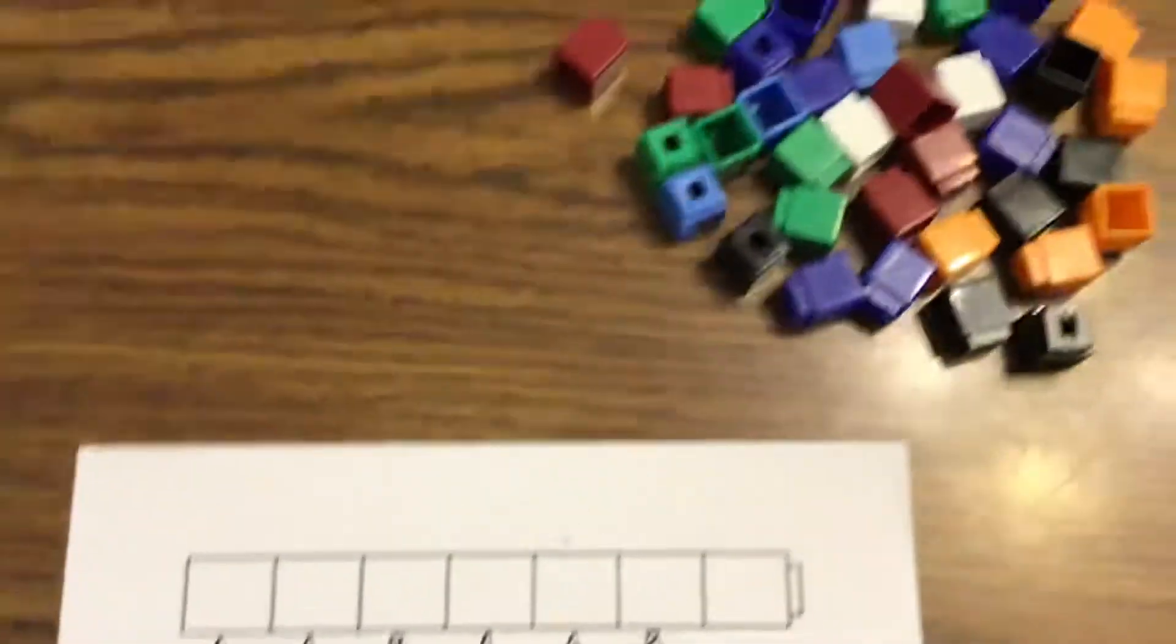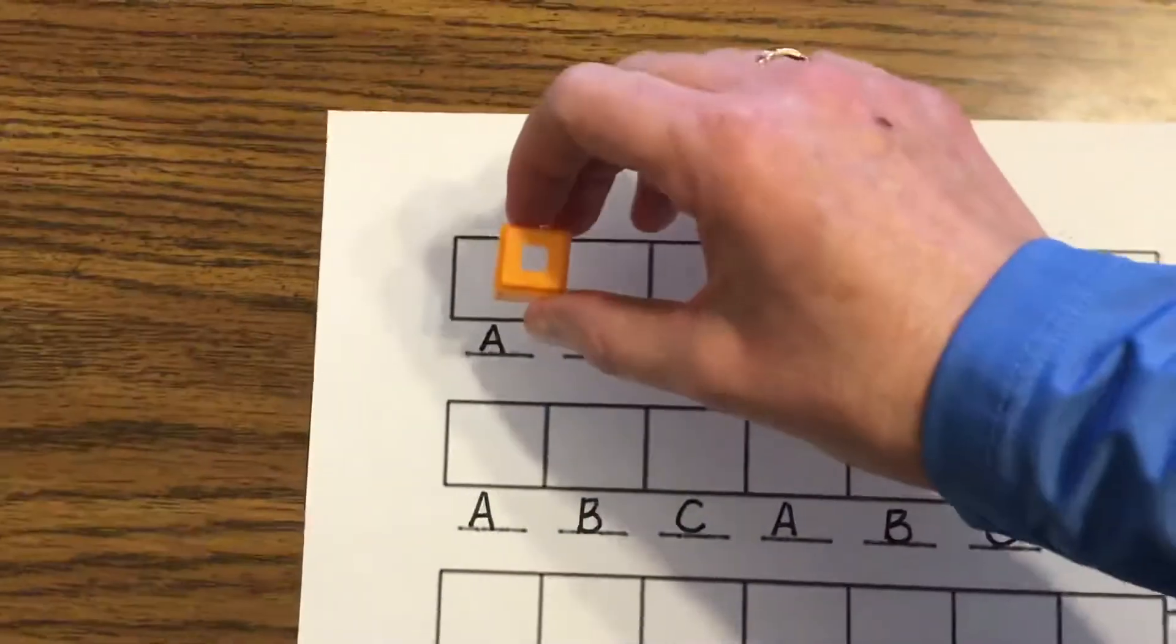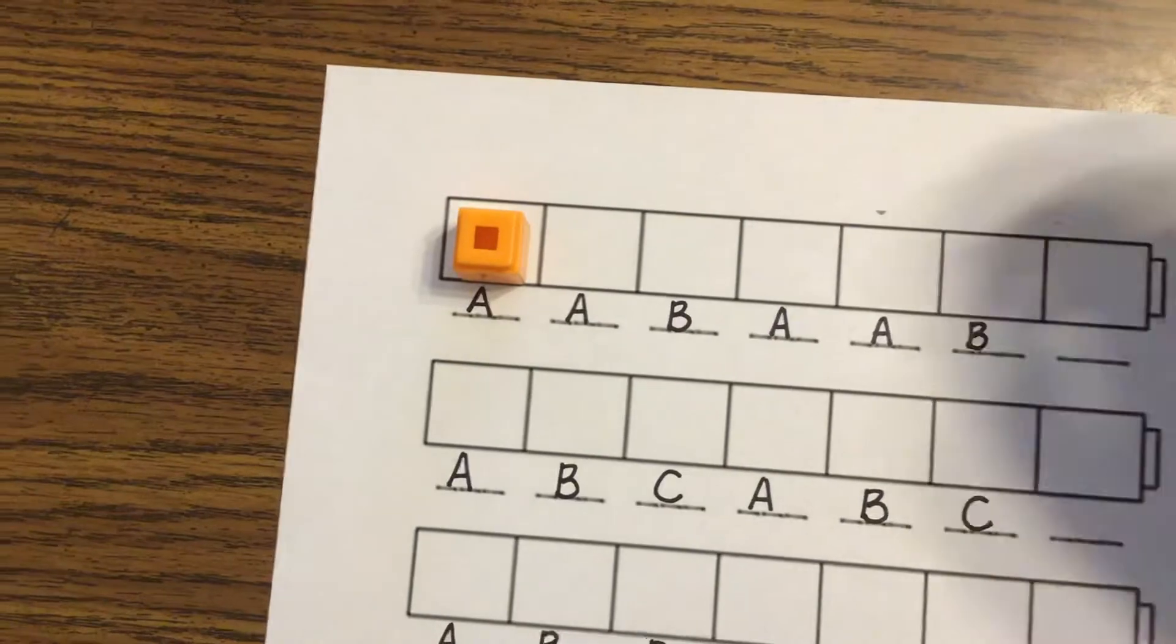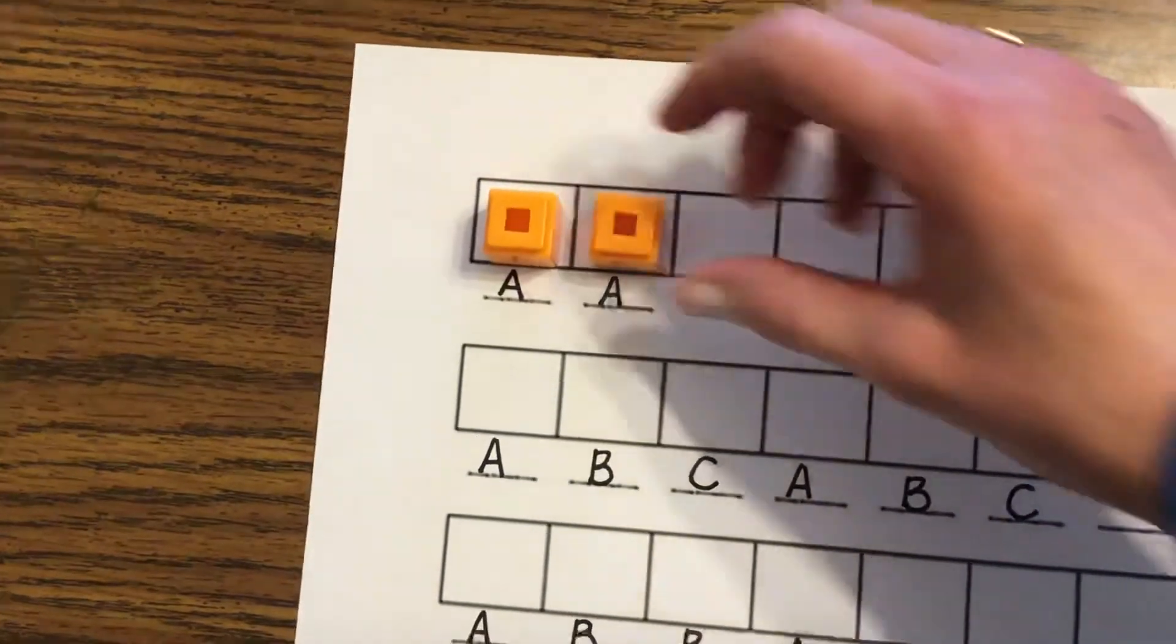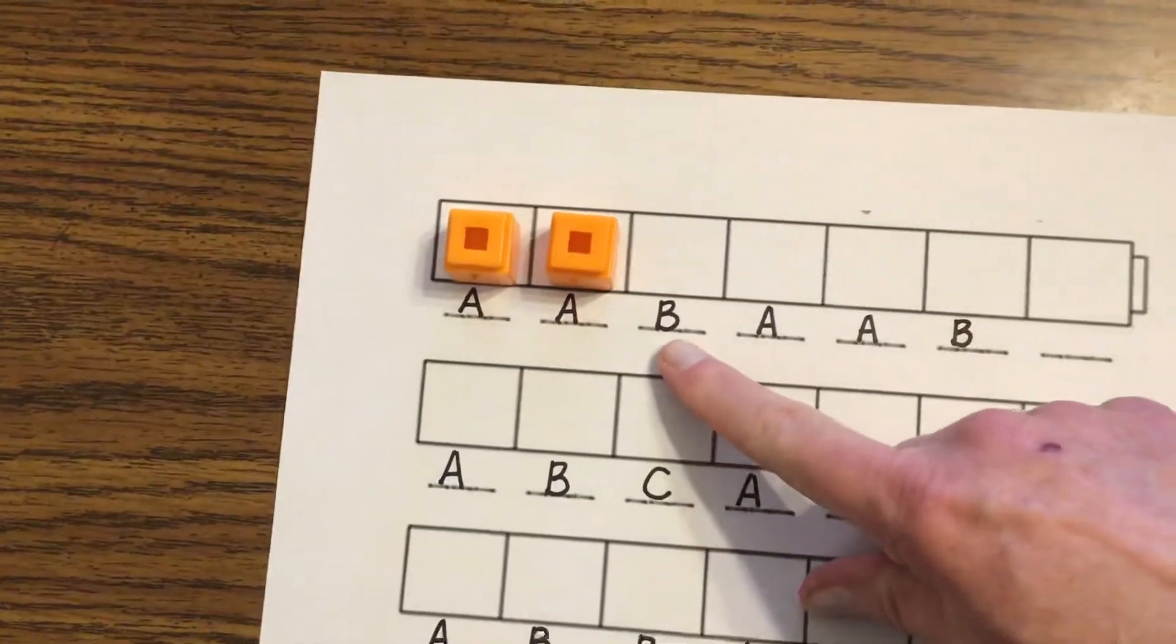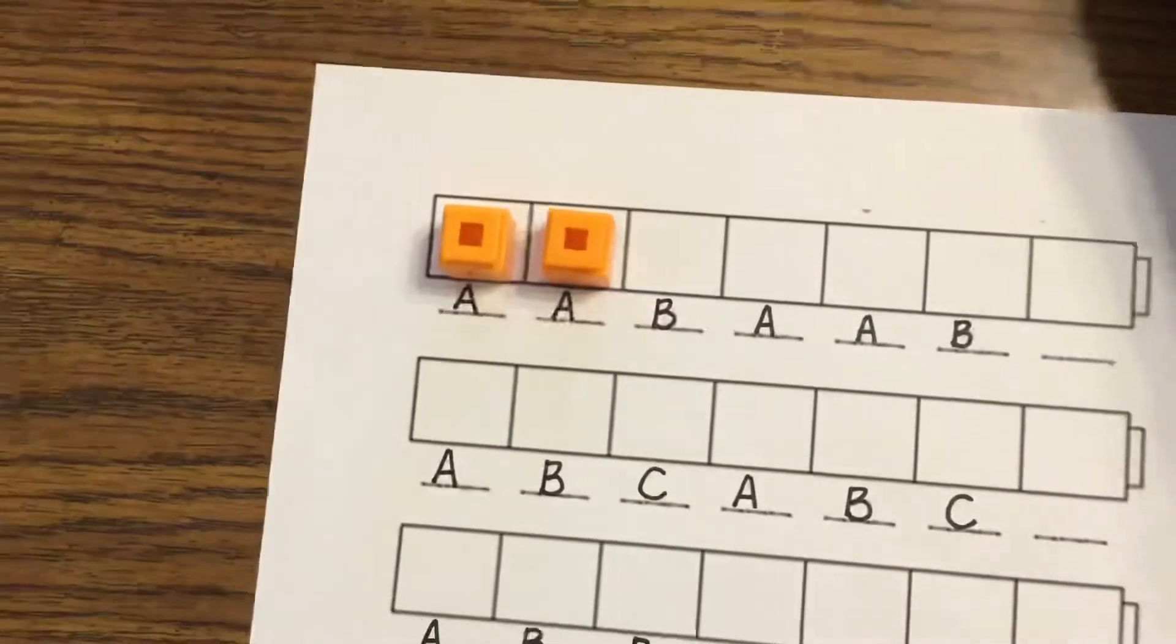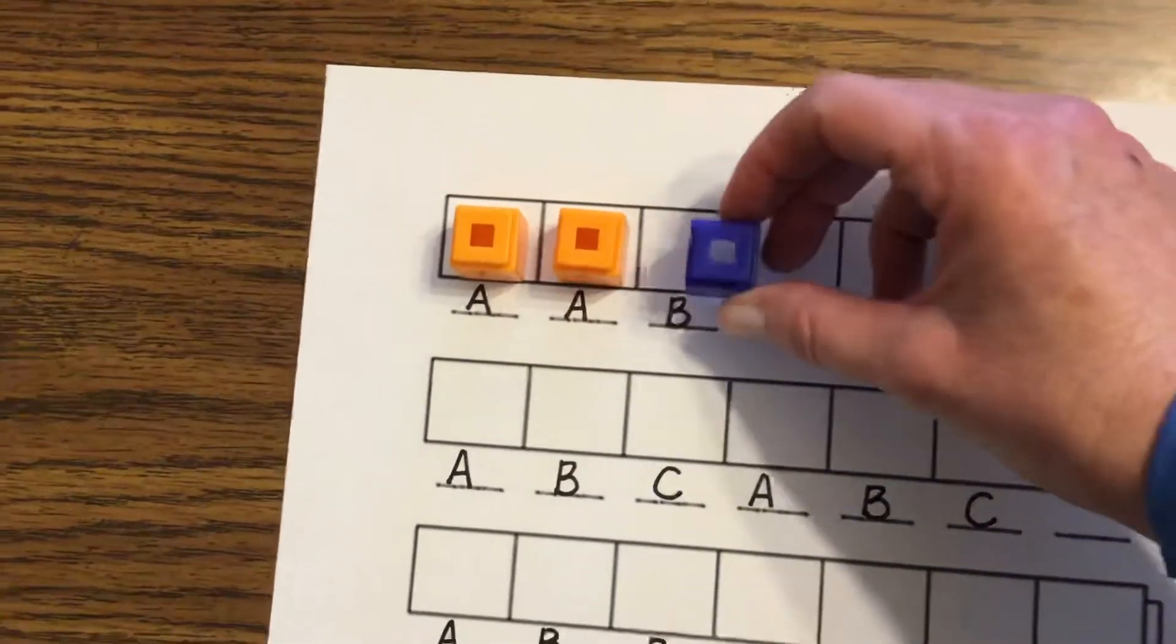So watch what I'm going to pick. I'm going to pick from my cubes here. I'm going to pick orange to be my A. So I need orange, orange. Now I have B. That means B has to be a different color. So I'm going to pick the different color of blue.